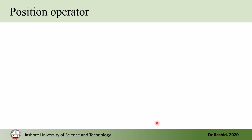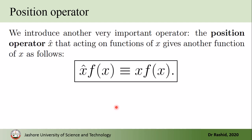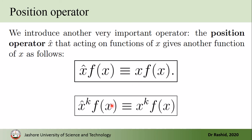Now we need to know another operator called the position operator. We define it as: when the position operator acts on a function, we multiply the function by x. So if the position operator acts k times on the function, we multiply x^k with the function.